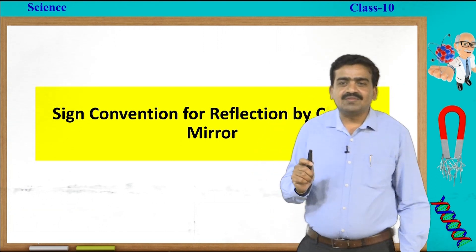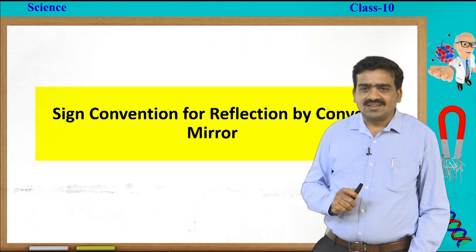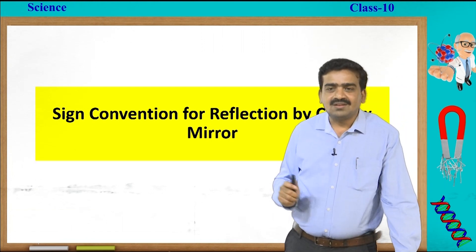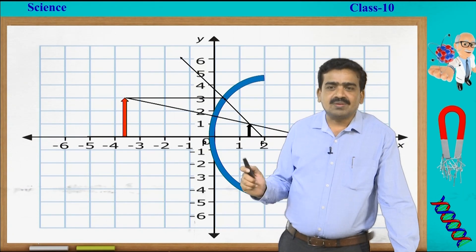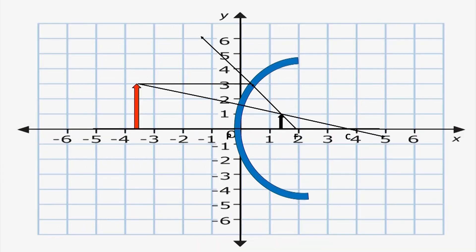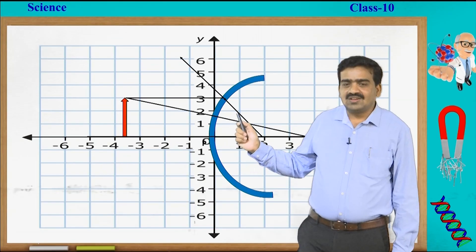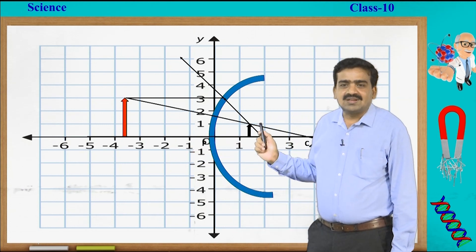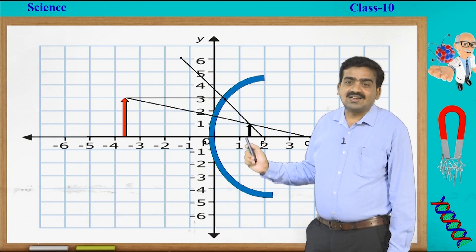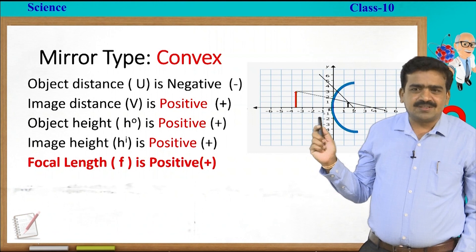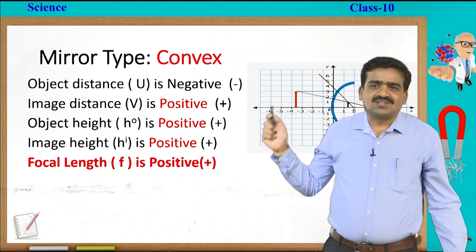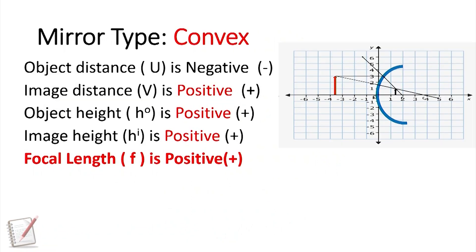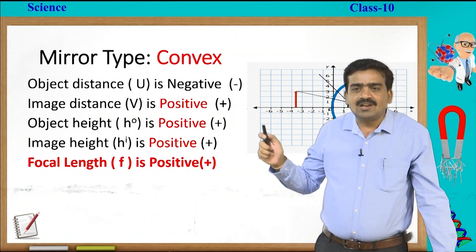Let us learn the sign convention for reflection by convex mirror. Remember how the image is formed in case of a convex mirror. Observe the location of the object, formation of the image, focal length, position of the object, and height of the image. From this picture, we can conclude: object distance u is negative, image distance v is positive, object height is positive, image height is positive, and focal length is positive. These are very helpful to solve the problem.